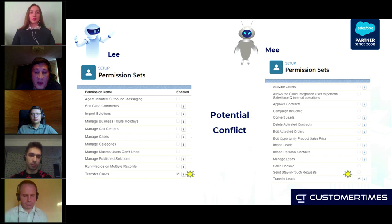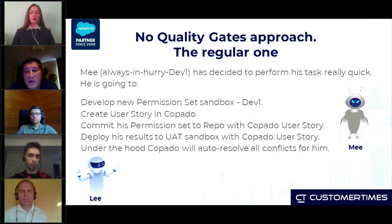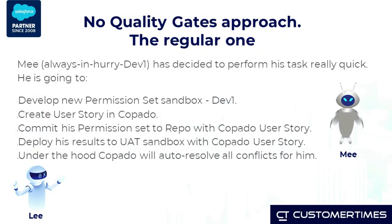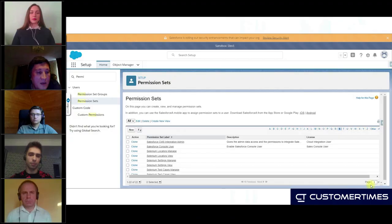Lee is going to create another permission set with the same API name but with the functionality Transfer Cases. Our imaginary developer Mi is always in a hurry. What he is going to do is the basic development steps with Copado: develop a new permission set in his sandbox, link his code to the user story in Copado, deploy his results to another environment, and then everything else will be taken care of by Copado.